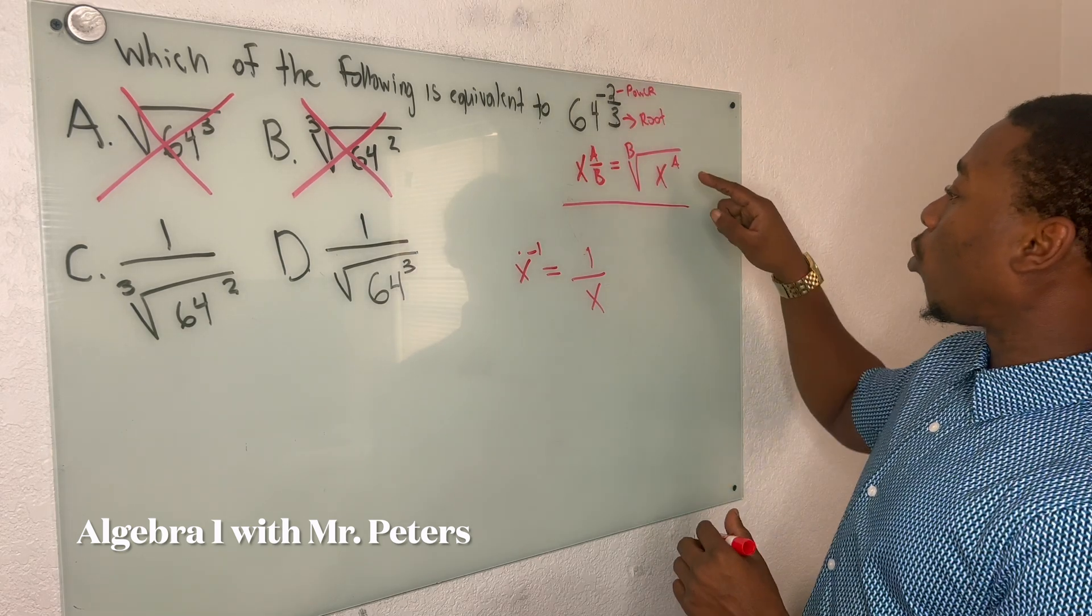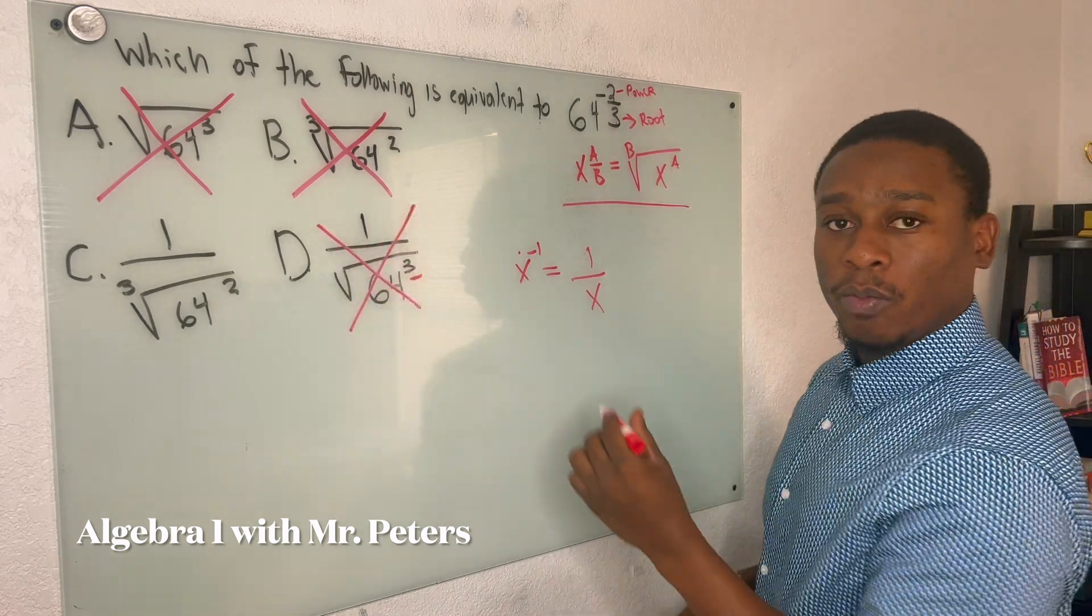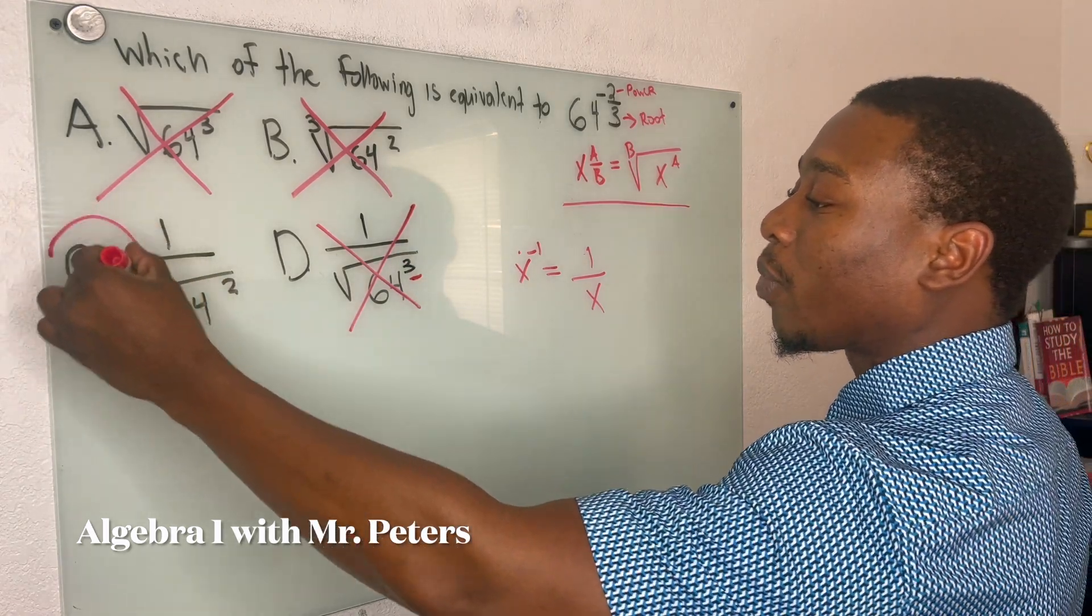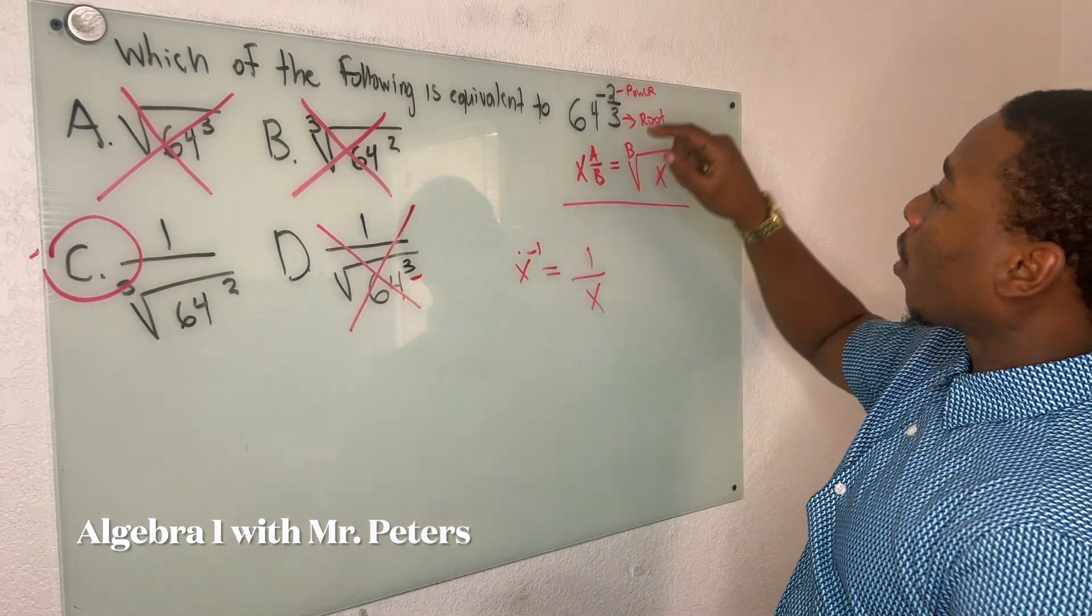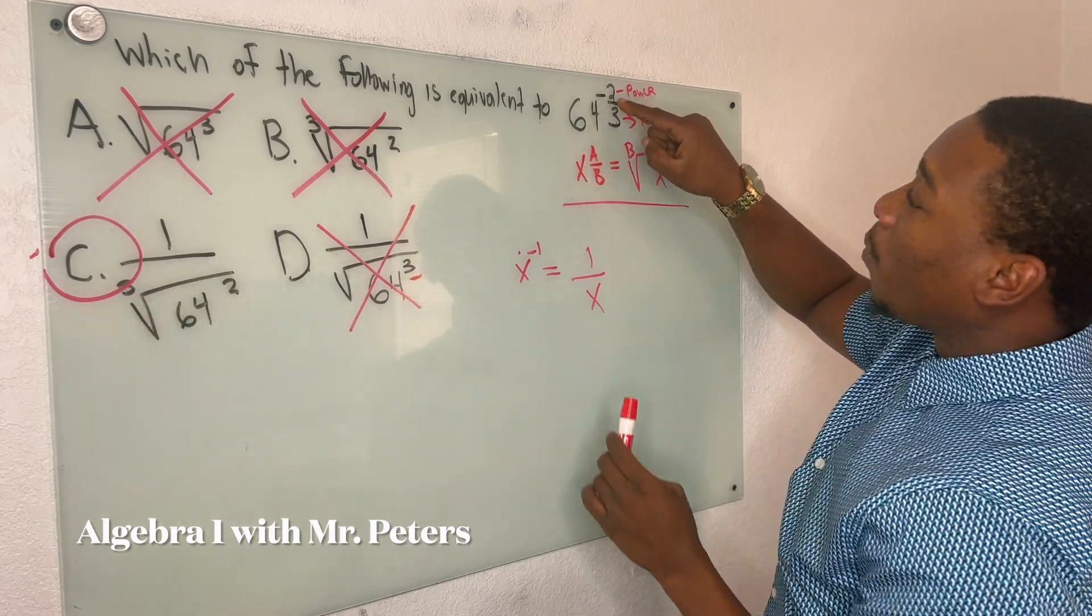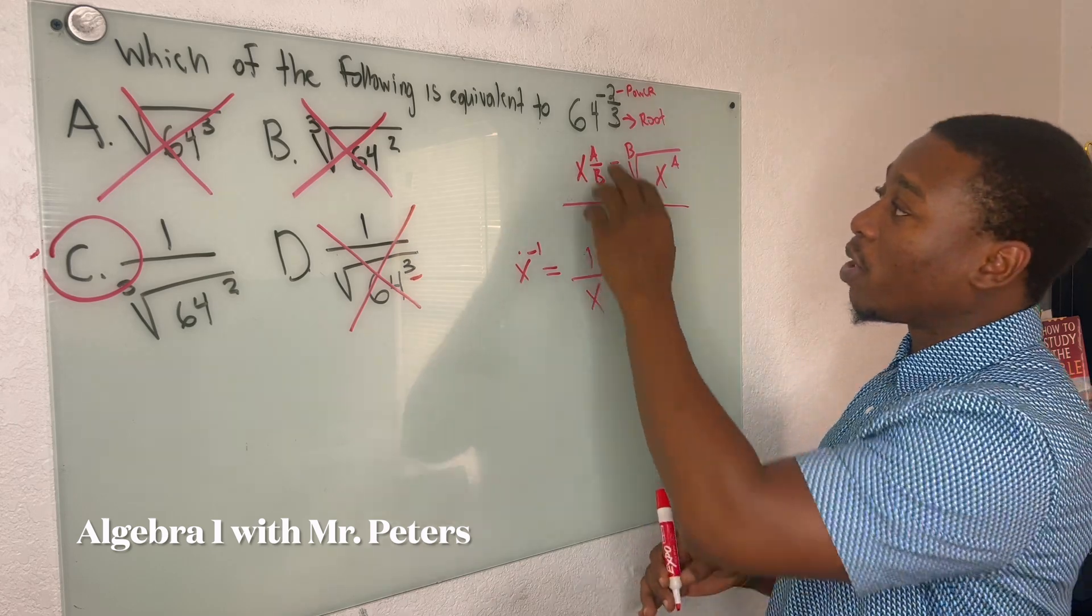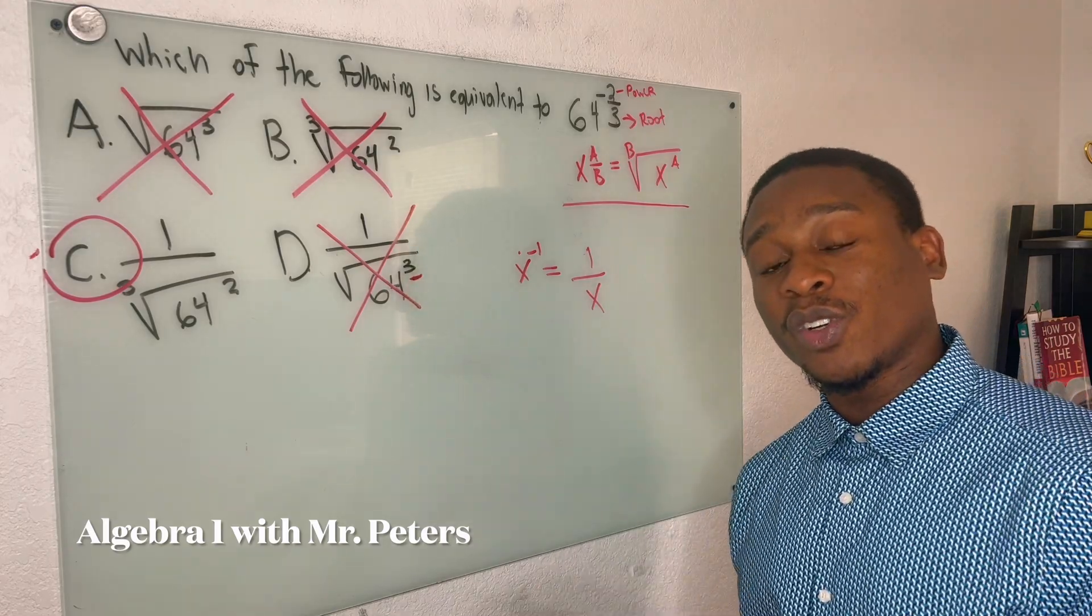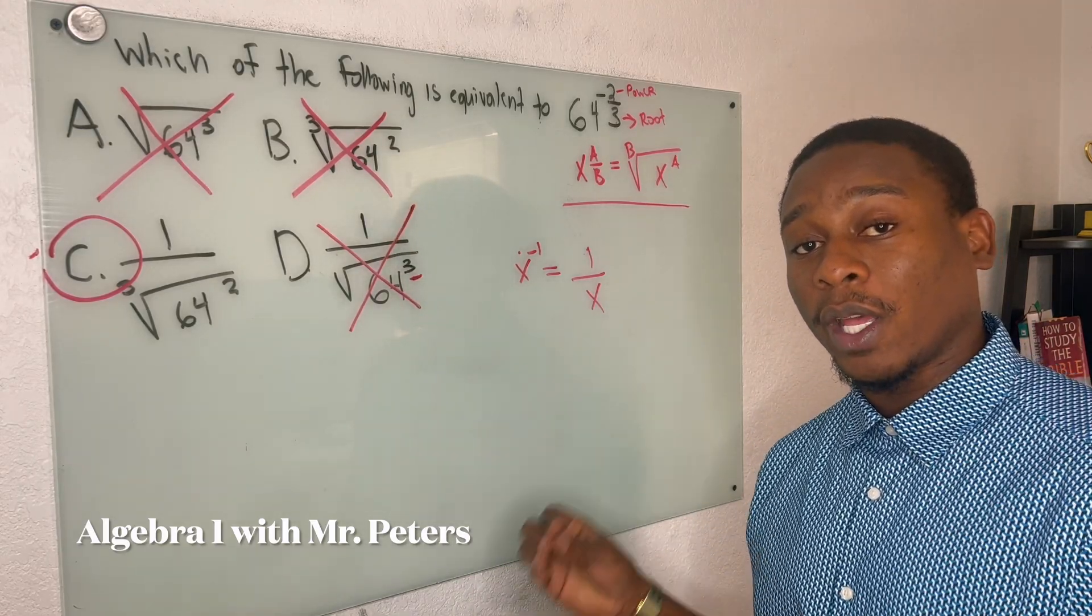So we're looking for a power of 2. So this is a power of 3. That would be wrong. And when I look at my answer choice C, I know this has to be the correct answer. 64 is our base. We have a power of 2, a root of 3. And because it was a negative exponent, we had to take the reciprocal, meaning put this over 1 and then flip it. So please make sure that you guys remember that when you're working with negative and fractional exponents.